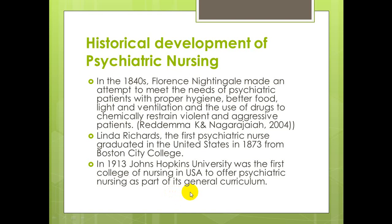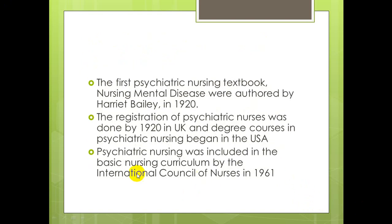In the 1840s, there were attempts to meet the needs of psychiatric patients. The first psychiatric nurse graduated in the United States in June 1873 from Boston University College — Linda L. Charles. Johns Hopkins University was the first college of nursing in the USA to include psychiatric nursing as part of the general curriculum. The first psychiatric nursing textbook was published in 1920, authored by Eric Bailey.